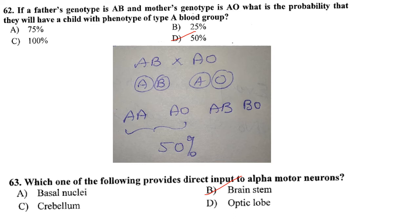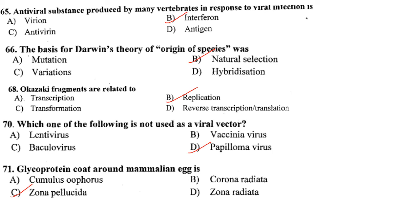Which of the following provides direct input to alpha motor neurons? It is the brain stem. The antiviral substance produced by many vertebrates in response to viral infection is interferon — answer is option B. The basis for Darwin's theory of the origin of species was natural selection — option B. Okazaki fragments are related to replication — answer is option B. Papilloma virus is not used as a viral vector in cloning experiments, whereas lentivirus, vaccinia virus, and baculovirus are all used. The glycoprotein coat around the mammalian egg is zona pellucida — answer is option C.